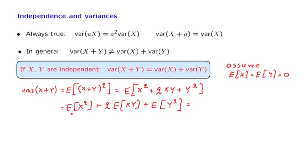And then plus the expected value of Y squared. Now, the first term is just the variance of X, because we have assumed that we have zero mean. The last term is similarly the variance of Y. How about the middle term?